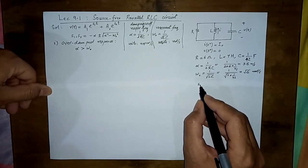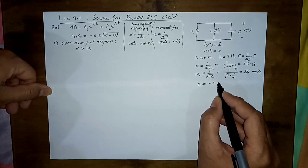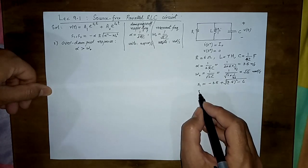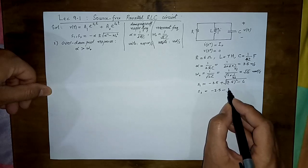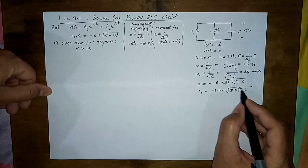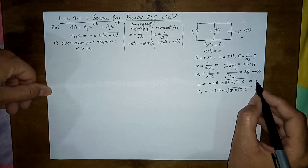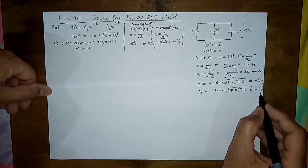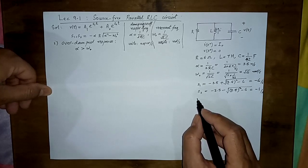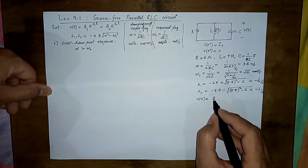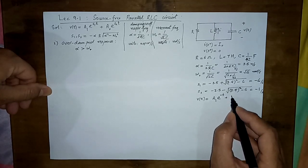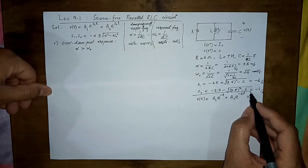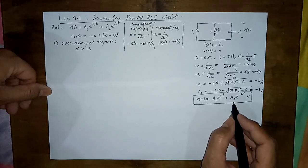We find s1 = −3.5 + √(3.5² − 6) = −1 per second, and s2 = −3.5 − √(3.5² − 6) = −6 per second. These are complex frequencies with dimensions of per second. The voltage response is therefore v(t) = A1·e^(−t) + A2·e^(−6t). What remains is to find A1 and A2.